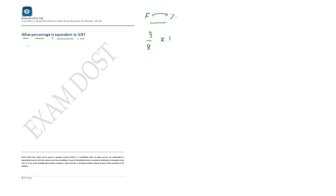To convert the fraction into a percentage, multiply 3/8 by 100. If we cancel by 4, we get 3/2 × 25. So 3 × 25 is 75, giving us 75/2, which equals 37.5.